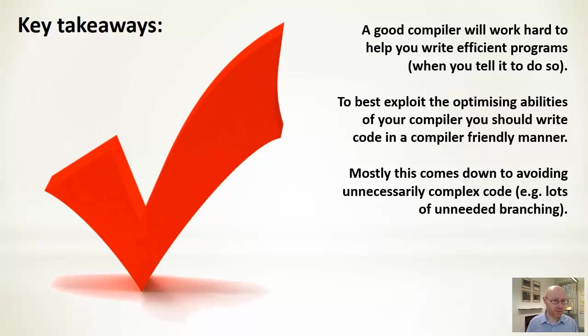You'll see that in a lot of this, it's going to come down to avoiding unnecessarily complex code. Now I say unnecessarily because some code may out of necessity be complex. But there are certain tips - like having lots of branching. If you don't need to do a lot of branching, then we should avoid that. Branching is one of the things that tends to throw off a lot of the optimizing compilers, but we'll see that in a later talk.